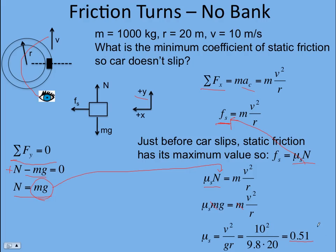Remember, the coefficient is dimensionless. So if the coefficient of static friction of the tires on the road is at least 0.51, then the car will be able to make this turn.